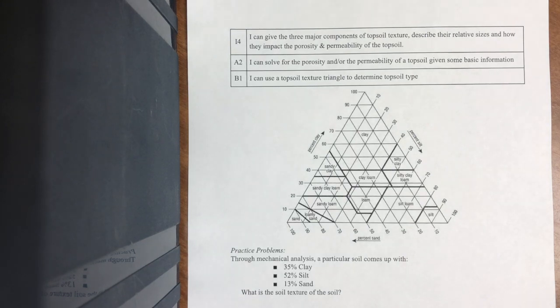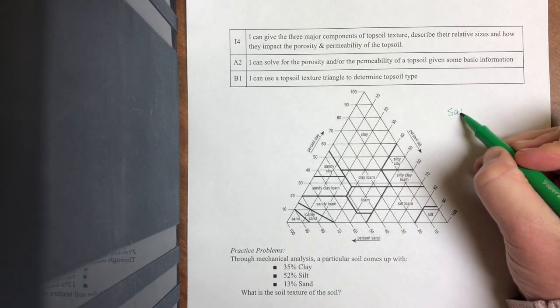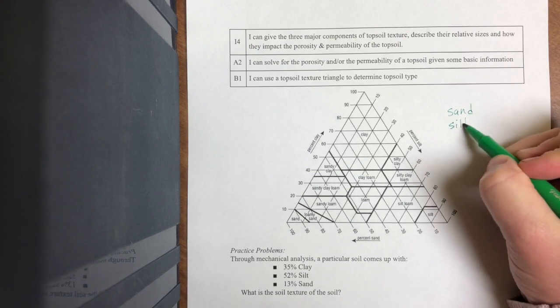This is a soil texture triangle. I've heard it referred to a lot of different things, but essentially we need to remember that soil texture is an abiotic factor for determining things about the soil, and it's made up of the three components of sand, silt, and clay.